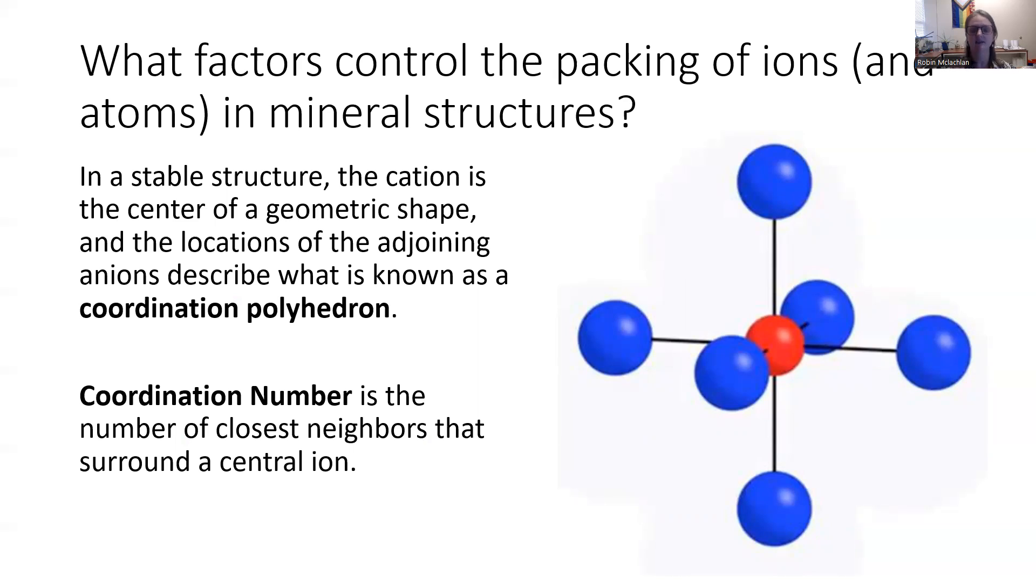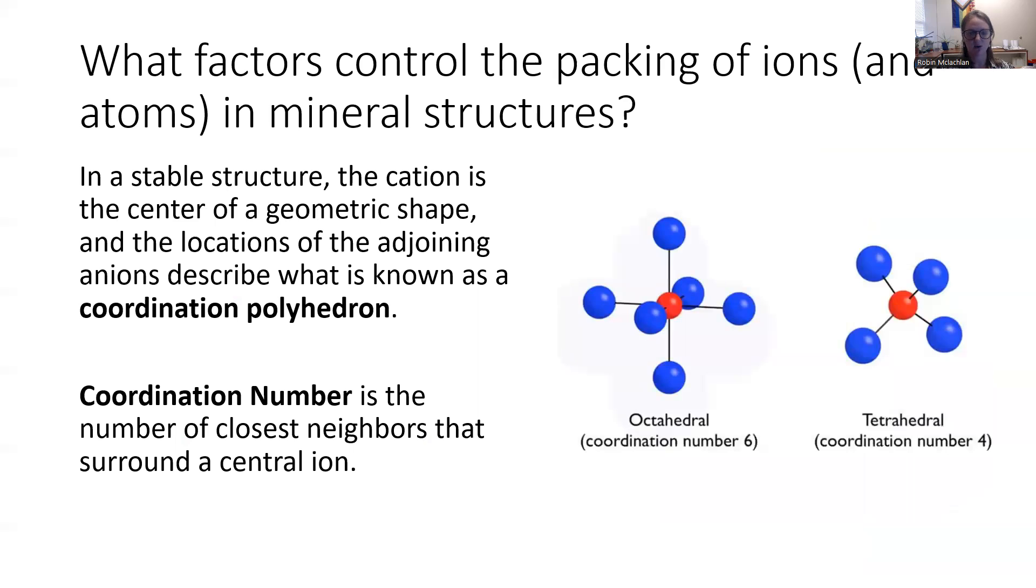And the coordination number is how many closest neighbors surround that central ion. So in this example, there's one central red ion and one, two, three, four, five, six outer surrounding closest neighbors. So we would say it has a coordination number of six. Here's some more examples. We call that octahedral with a coordination of six, tetrahedral coordination number four. SiO2, the silica tetrahedral is a really common example of this.